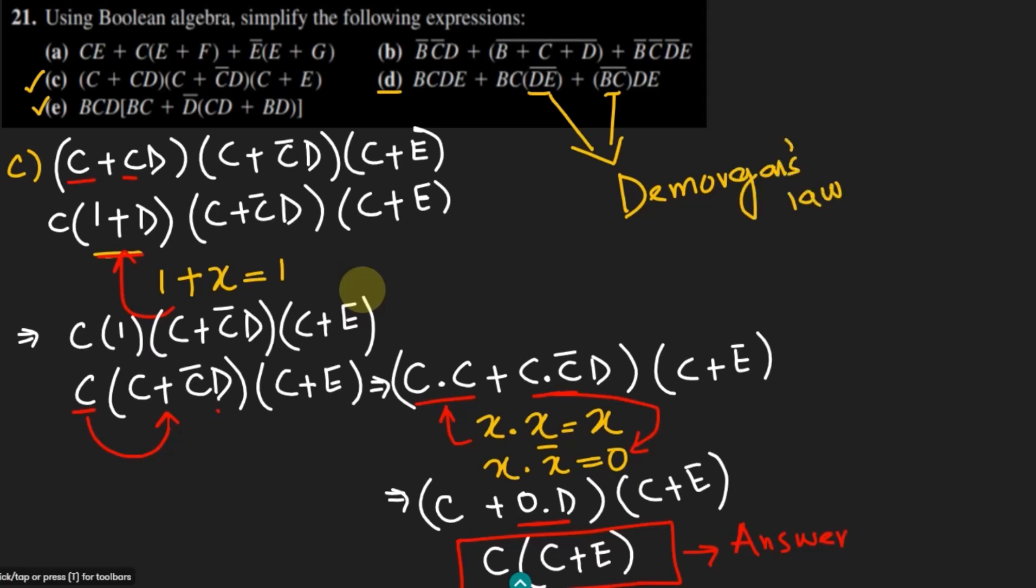De Morgan's law will be used here, and similarly in part E, what do we have to do? We have to open these brackets, and before opening these, we have to multiply this D prime with all these terms here. First we have to open these small brackets and at the end we have to open the square brackets.